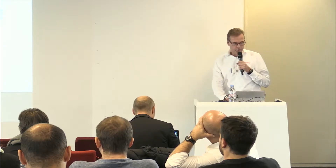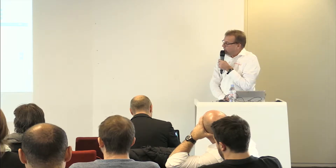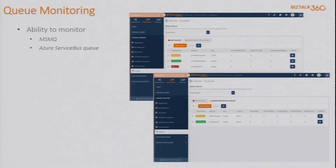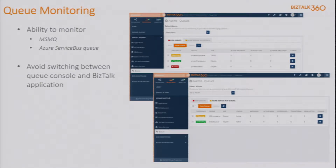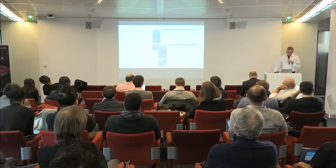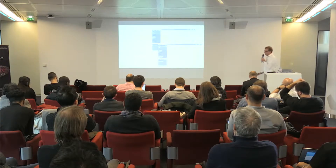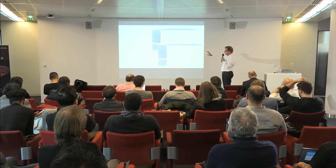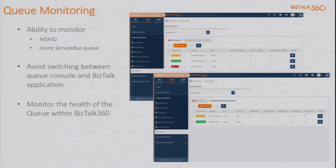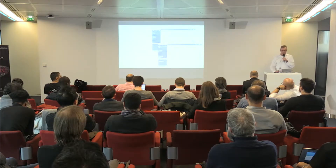Next, we have introduced queue monitoring — both for Microsoft Message Queuing and for Azure Service Bus queues. One of the main things we want to provide is one platform, so you only need one tool to administer and monitor your BizTalk environment. You can use BizTalk 360 to monitor the health of your queues and service bus queues. We also have a separate product, Service Bus 360, which provides even more monitoring with all kinds of additional parameters.